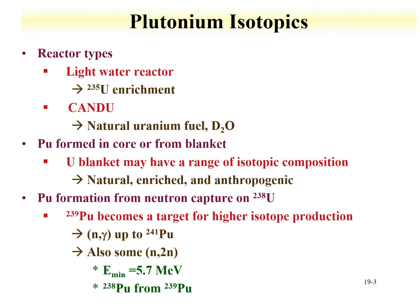Plutonium isotopics provide excellent signatures for nuclear forensics applications. Plutonium can be produced in reactors through neutron capture on uranium-238 and subsequent decays of uranium-239, neptunium-239, and plutonium-239. Two reactor types of concern are light water reactors and CANDU reactors. Light water reactors use regular water as the coolant and enriched uranium-235 fuel. The CANDU reactor — Canadian Deuterium-Uranium Reactor — uses natural uranium with a deuterated water (D2O) coolant, and the plutonium isotopics will be impacted accordingly.